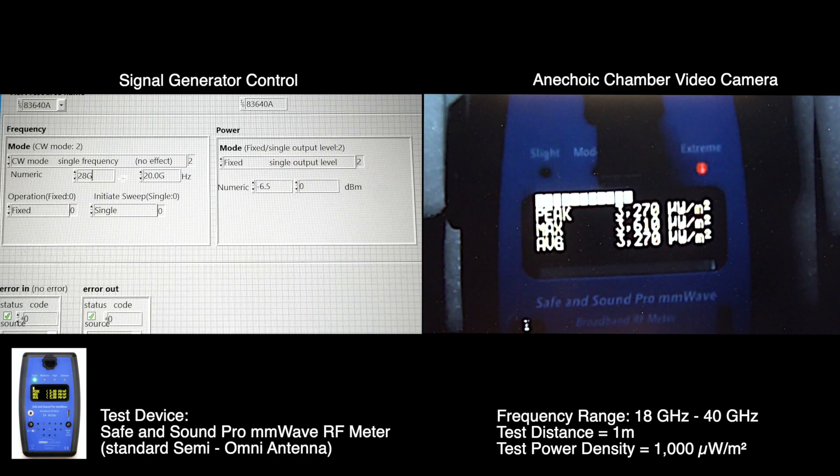28 gigahertz. Minus 7.2 dBm. So that's 2200 microwatts per square meter.